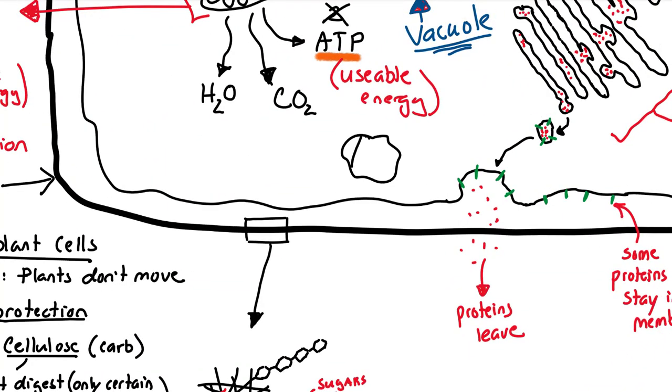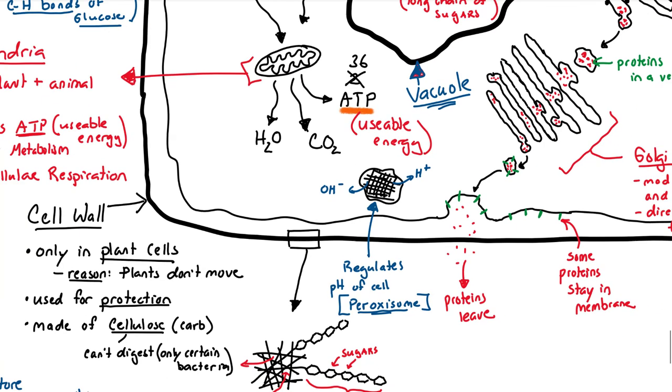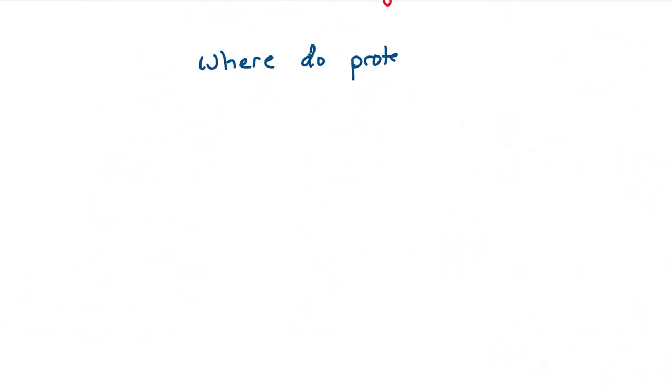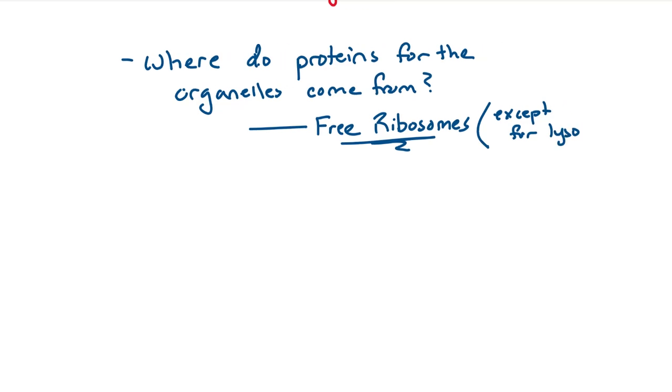Our last organelle in this picture, this thing called a peroxisome. It regulates or controls the pH of the cell. And that's necessary for proper cellular function. Certain enzymes and chemical reactions only happen in certain pH levels. So where do these proteins for organelles come from? We did mention it. Free ribosomes, you got them. Except for the lysosome and peroxisome.